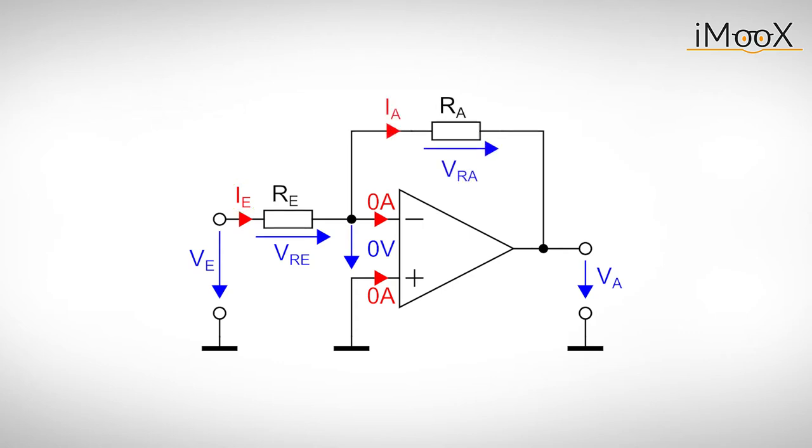Since I minus is 0A, Ie flows on through Ra and causes a voltage drop Vra. This voltage drop equals Ra times Ie. Substituting the current Ie gives Vra as a function of the input voltage.